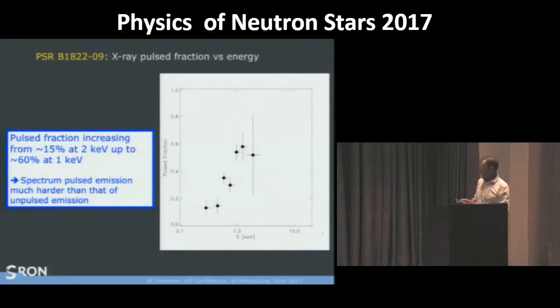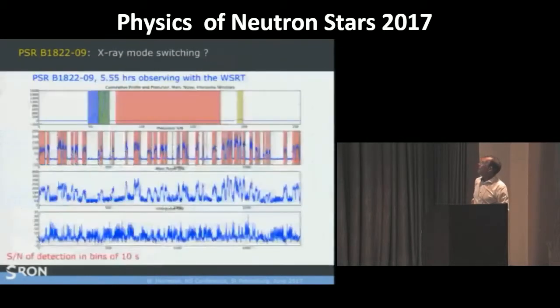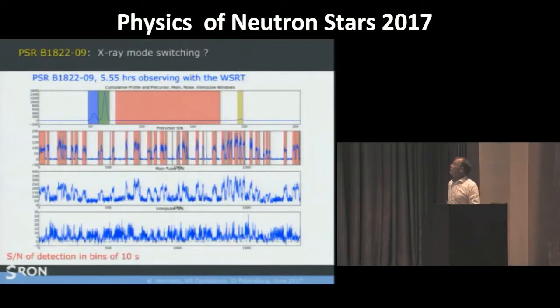We look for mode switching. This is an example of our radio data. Here you see the pulse, main pulse, precursor, interpulse. Here you see the detection signal to noise ratio of the precursor. And you see really on, off, on, off. The main pulse is high when the precursor is on, weak when the precursor is off. And the interpulse is doing this in anti-correlation. We selected this on the precursor because there we have the cleanest separation of the two modes.